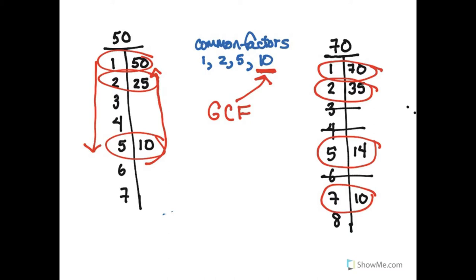It's what we use to simplify fractions. So if this were a fraction, 50 over 70, we could divide the top and bottom by the greatest common factor, which is 10, to simplify the fraction to 5 sevenths. But the greatest common factor is also what we want to use when we're factoring a polynomial expression.